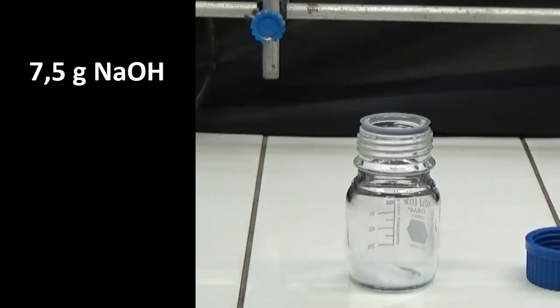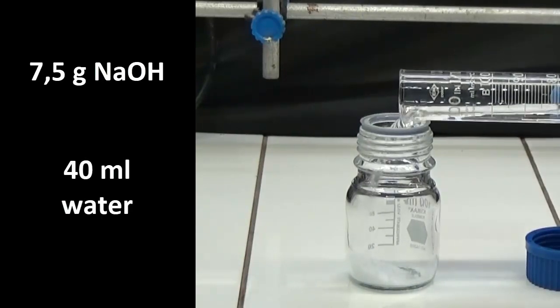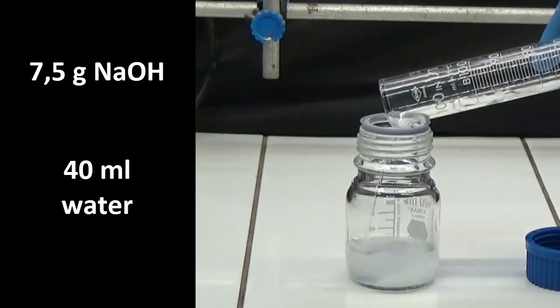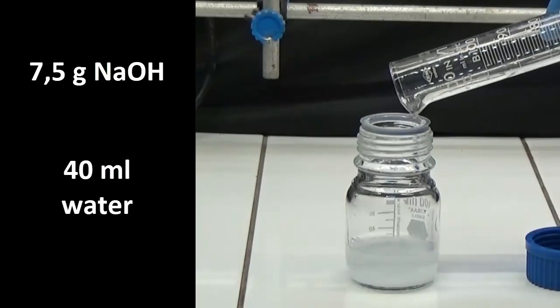Prepare the sodium hydroxide solution by dissolving 7.5 grams in 40 milliliters of water.